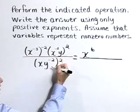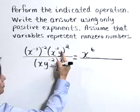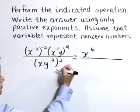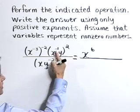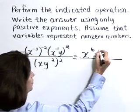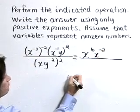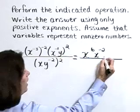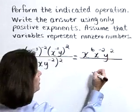With our second factor, we're going to raise each of these to the second power. x to the negative 1 raised to the second is x to the negative 1 times 2 or negative 2 power. And we also have y to the second power.